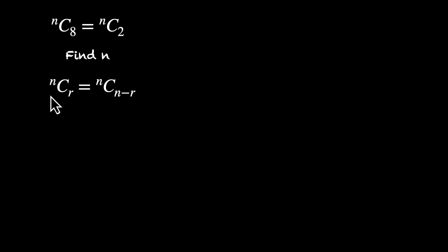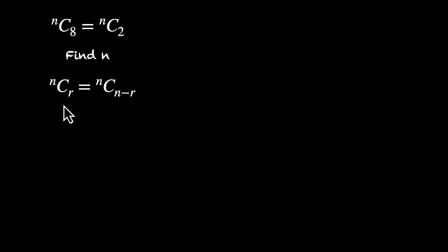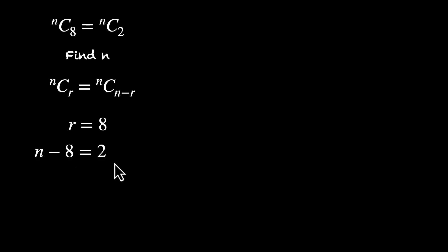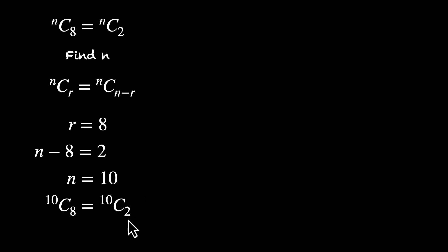Here's an observation derived in the previous video: nCr is the same as nC(n-r). The number of ways of selecting r things out of n is the same as the number of ways of selecting n-r things out of n. Comparing the two, r equals 8 and n-r equals 2, so n-8 equals 2, giving us n equals 10. Pretty straightforward — 10C8 is the same as 10C2.